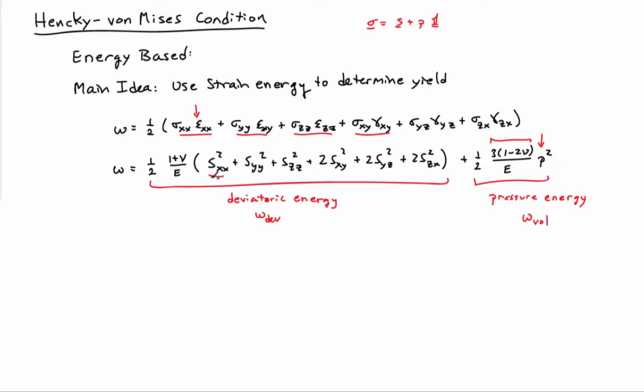So we have the s_xx, s_yy, etc., including the shear pieces here. And then we have some material constants, one plus the Poisson's ratio over E sitting out front. And the basic idea of the Hencky-von Mises criteria is that we're going to say that the deviatoric strain energy has to be less than or equal to some calibration constant. And that calibration constant is the deviatoric strain energy in a one-dimensional uniaxial tension test at yield. So this is the basic idea of the Hencky-von Mises condition.